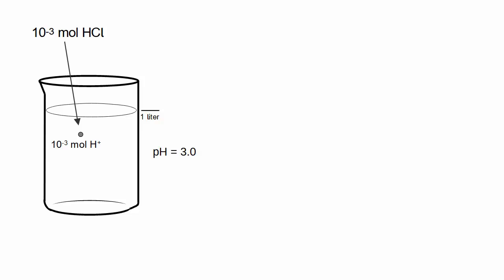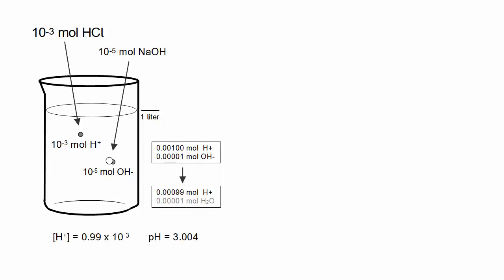If you also add 10 to the minus 5 mole sodium hydroxide, which is one hundredth as much, the H-plus concentration is reduced by 1%, and the pH is hardly affected.